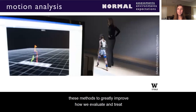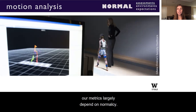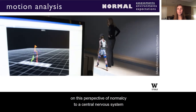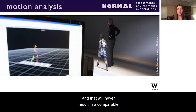While we've been able to leverage these methods to greatly improve how we evaluate and treat children with cerebral palsy, underlying these assessments, our metrics largely depend on normalcy. We systematically compare to normal kinematics, strength, range of motion, and milestones. We base surgical and rehab decisions on this perspective of normalcy applied to a central nervous system that is altered and functions in a different way, and that will never result in a comparable biomechanical or neuromechanical state to whatever normal is.